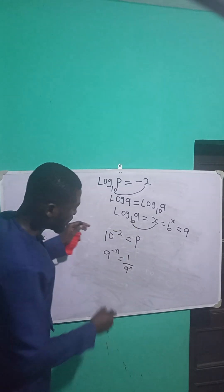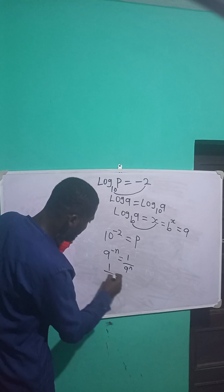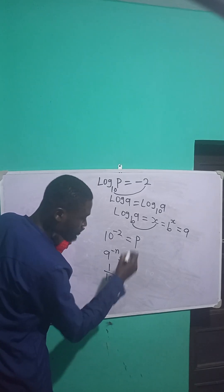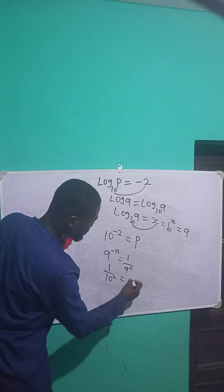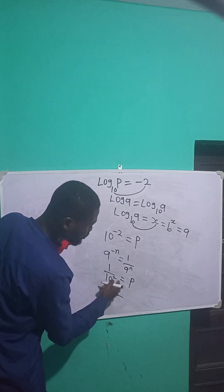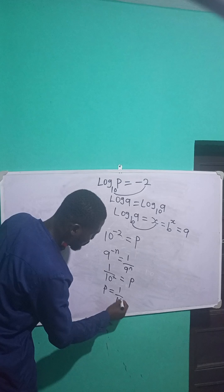If I apply this rule here, it becomes 1 over this 10, then raised to the power of 2, is equal to P. So P is equal to 1 over 10 raised to the power of 2, which is 100.